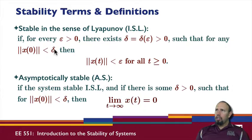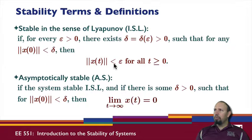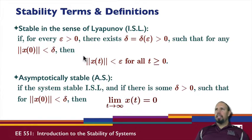Notice that this describes a ball associated with the norm being used — generally the two-norm, the standard Euclidean norm. If you start within a ball of radius delta, you'll stay within a ball of radius epsilon for all time. This doesn't say anything about convergence; it says the system will not diverge.